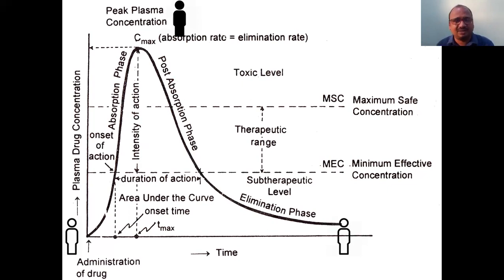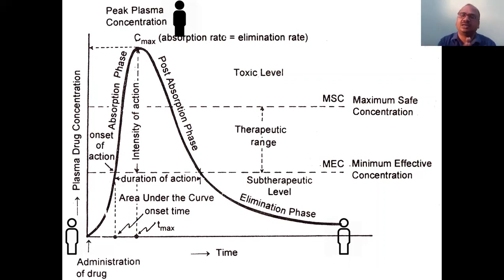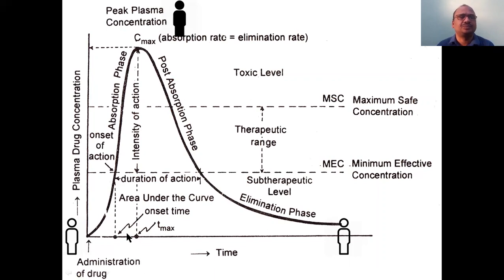After Cmax and Tmax, the entire area under this curve is called the Area Under the Curve (AUC). AUC is the main basic point for bioavailability — how much amount of drug entered the body. Bioavailability refers to both the rate and extent of drug absorption. AUC gives the extent of absorption; Cmax and Tmax give the rate of absorption.